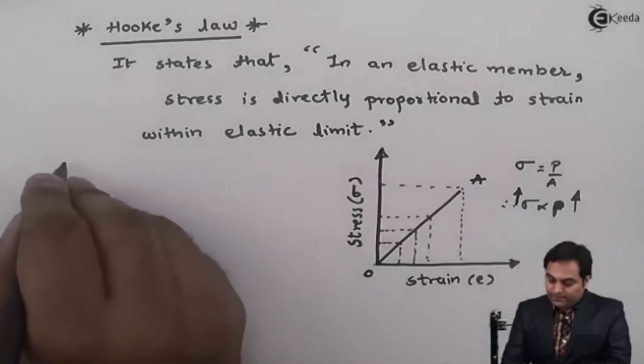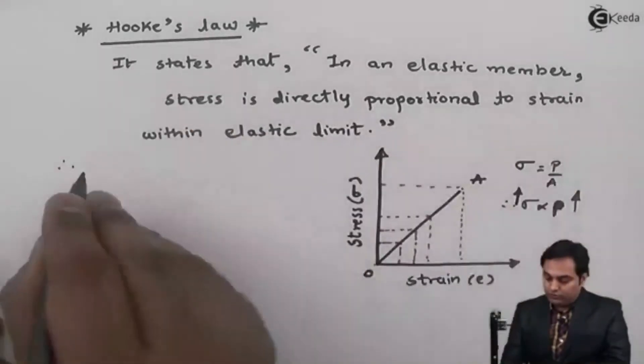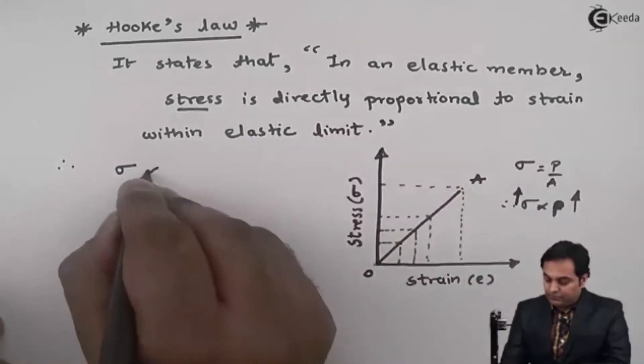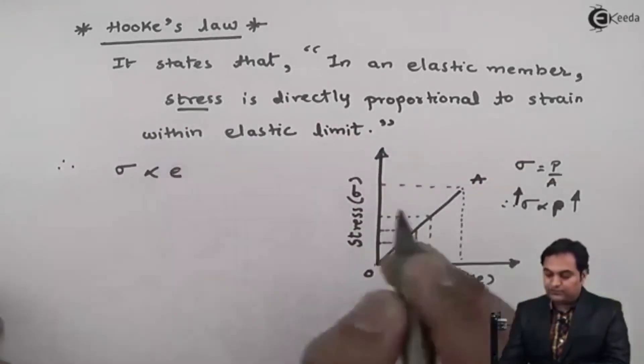So I will say that therefore from Hooke's law I can write down: stress, sigma, is directly proportional to strain which is small e.